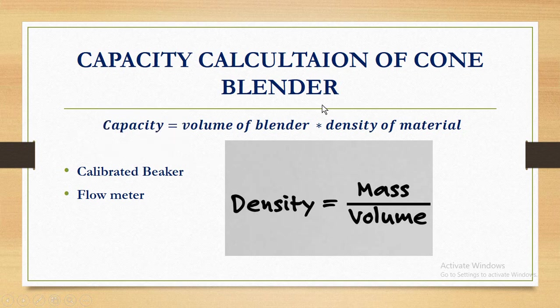We need the volume of blender and the density of materials. The density of the product is different for different products. If we talk about aerosols, they are lightweight, so the quantity that fits in the blender will be less. Because the volume and density of each material is different, the capacity in kg varies.